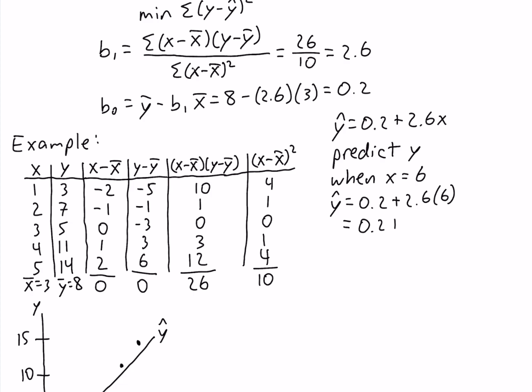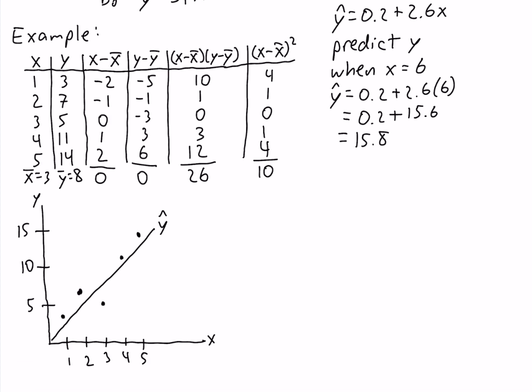So we have y-hat equals 0.2 plus 2.6 times 6, which equals 0.2 plus 15.6, giving us 15.8. Our prediction should lie on the estimated regression line y-hat when x equals 6. If we move up from x equals 6, we land at about 15.8, confirming that our predictions for y lie on the estimated regression line.